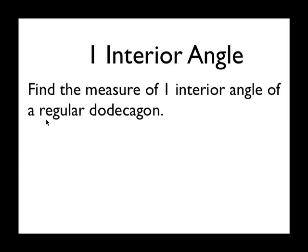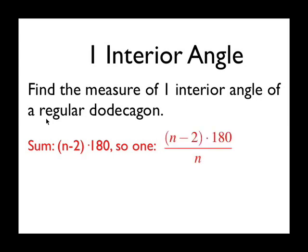We know from our last episode that the sum of the interior angles is (n-2) times 180, where n is the number of sides. Since our polygon is regular, that means that all the angles are the same. So the formula would be (n-2) times 180 divided by n, where n represents the number of sides the polygon has.